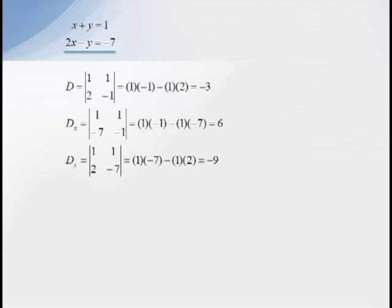Here's an example using this technique. We'll start with a system of two linear equations in the two unknown variables X and Y. We have X plus Y equals 1 and 2X minus Y equals negative 7. We now compute the three determinants D, DX, and DY. D is the determinant of our coefficient matrix 1, 1, 2, negative 1, which is just 1 times negative 1 minus 1 times 2, which equals negative 3.